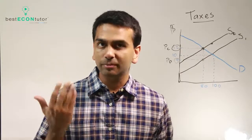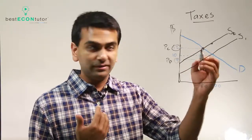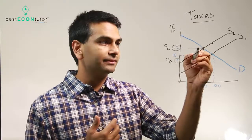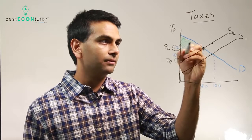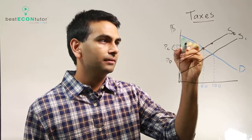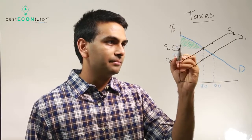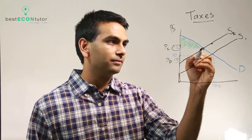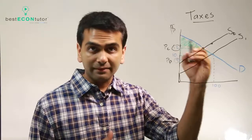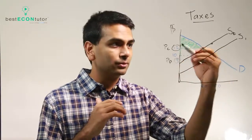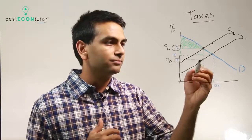Now let's look at the consumer surplus. They're facing a price of 12 instead of 10 and they're only buying 80 units, so their consumer surplus is only this area now. This is the new CS area, and notice it's less than before by this trapezoid — because it used to be above 10, now it's above 12. Consumers are worse off; they have to pay more and they get to buy fewer items.